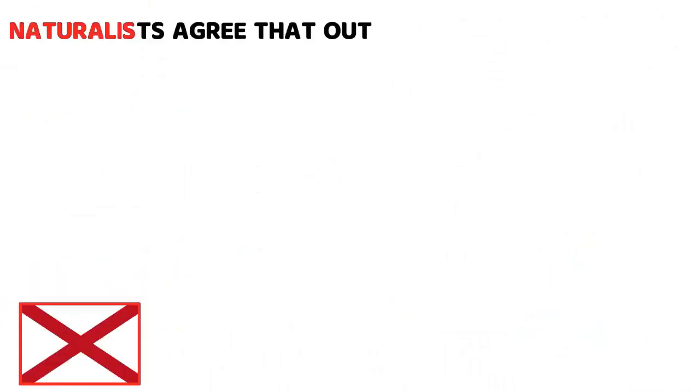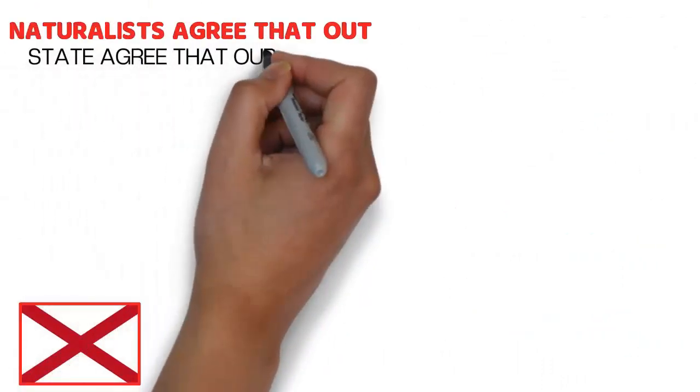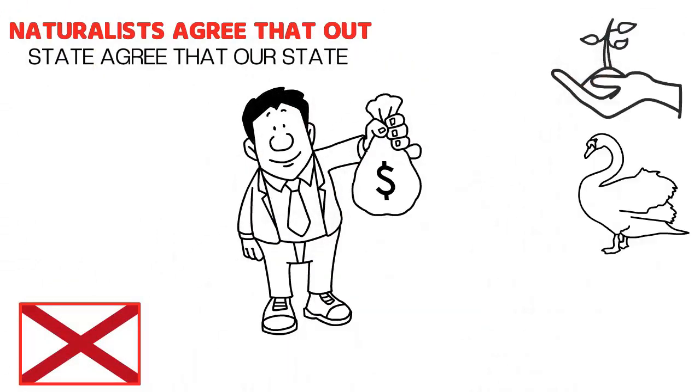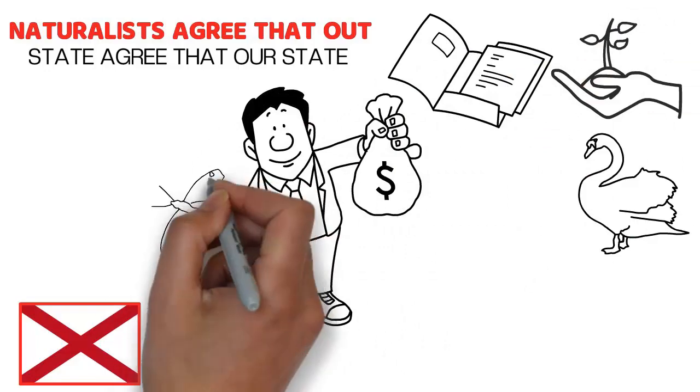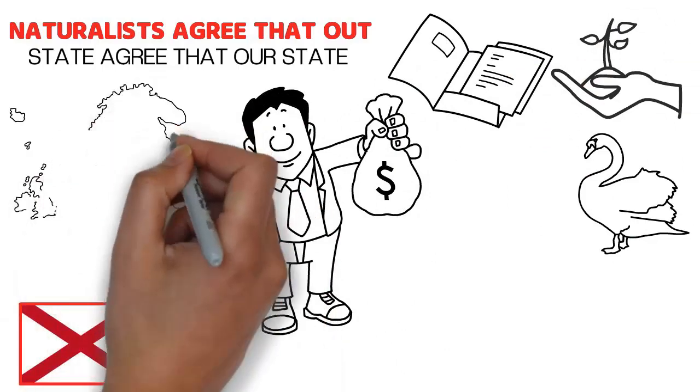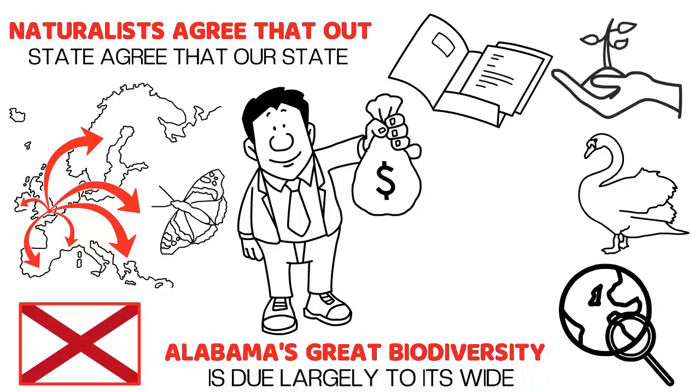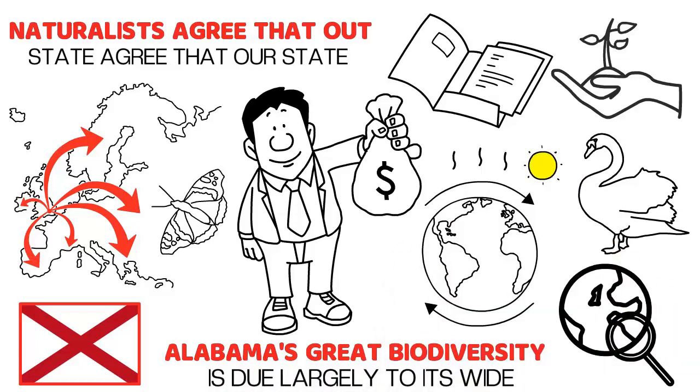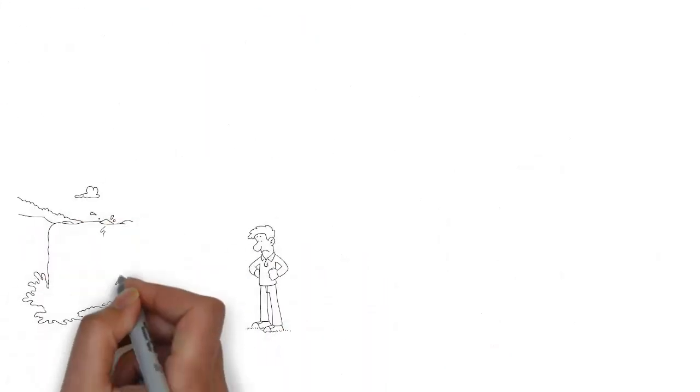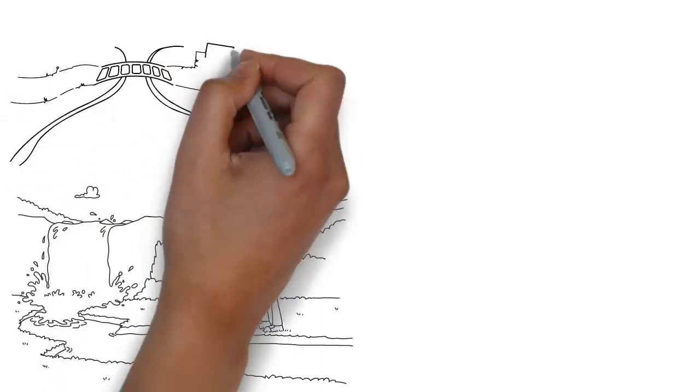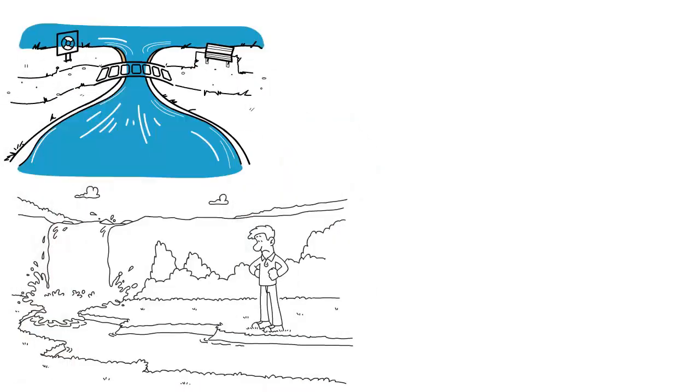All Alabama naturalists agree that our state has an extraordinarily rich diversity of animal and plant life. The number of documented butterfly species rivals and surpasses that of most states. Alabama's great biodiversity is due largely to its wide diversity of geology and moderate to warm climate. All of the land diversity is drained by various river systems, with the massive Tennessee River flowing through the northern one-fifth of the state.